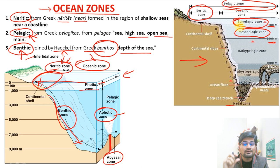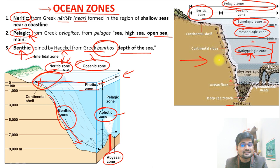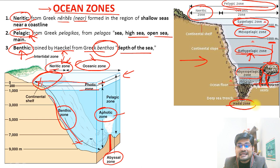From 1000 meters to 4000 meters is the bathypelagic zone — the third layer in the pelagic zone. Going further down to the abyssal plains, you have the abyssopelagic zone, where you also find black smokers — smokes released from the degassing of the ocean surface.